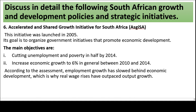6. Accelerated and Shared Growth Initiative for South Africa (ASGISA). This initiative was launched in 2005. Its goal is to organize government initiatives that promote economic development. The main objectives are cutting unemployment and poverty in half by 2014, and increasing economic growth to 6% in general between 2010 and 2014. According to the assessment, employment growth has slowed behind economic development, which is why real wage rises have outpaced output growth.